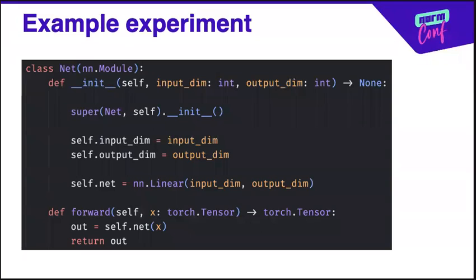I'm going to use a single layer neural network as the running example for ML model. Here we have the definition of the model as a Torch module. It takes as input the input and output data dimensions. It's a very standard module and it's going to serve as the running example.